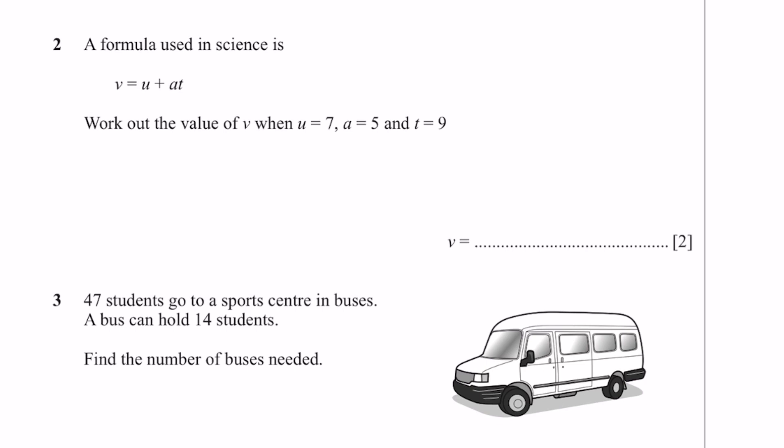Question 2. A formula used in science is V equals U plus AT. Work out the value of V when U equals 7, A equals 5, and T is equal to 9. So we can just substitute: 7 plus 5 into 9, and that's equal to 7 plus 45, which is 52. That's the answer.